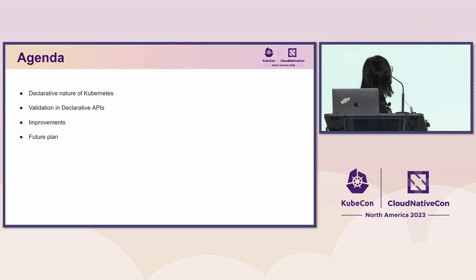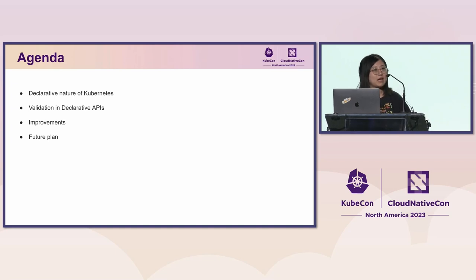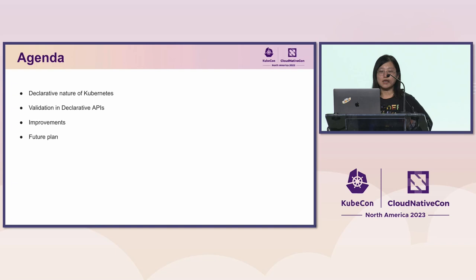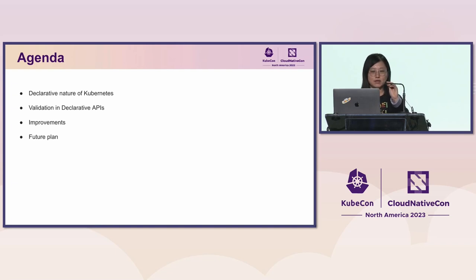So the topic is "declarative everything." What's going to be covered today? We'll first begin with the declarative nature of Kubernetes, then talk about the notable missing pieces inside declarative APIs, talk about all the improvements we did and plan to do, and then the future plan at the end.